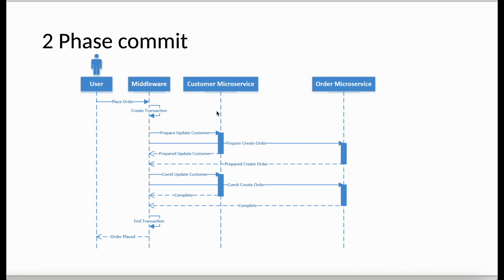The second issue is that the transaction blocks data until it gets a positive or negative response — the transaction is on hold. Furthermore, suppose the prepare phase completes and we start the commit phase, but the coordinator fails in between. Since there is a single point of failure, the application could crash or the calling services would wait indefinitely, creating unexpected failures. These are some key challenges with the two-phase commit.